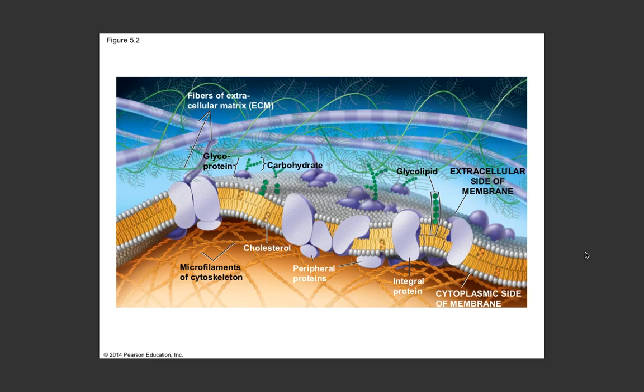Notice that the peripheral proteins are on the interior side. You also have glycoproteins - 'glyco' is a prefix meaning sugar, so these are sugars slapped on top of a protein. You also see glycolipids, which are sugars attached to lipids, and carbohydrate chains extending from the membrane. There are also fibers making up our extracellular matrix involving microtubules, microfilaments, and intermediate filaments that help maintain structure, transport things around the cell, and anchor cells to each other.